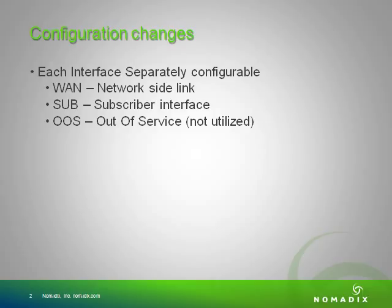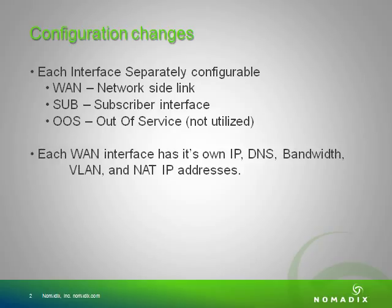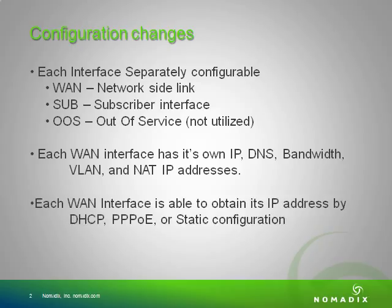The subscriber side is where you would connect your guest network, and out of service means that interface is not utilized at all. Each WAN interface has its own IP, DNS, bandwidth, VLAN, and NAT IP addresses configurable specific to that interface. Each WAN interface can obtain its IP address by DHCP, PPPoE, or it can be statically configured to match the settings from the ISP for that WAN.